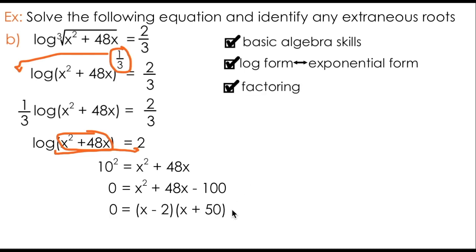Factoring this trinomial results in x minus 2 times x plus 50. By solving this quadratic equation, we see that x can equal 2 as well as x can equal negative 50. So we've managed to solve this logarithmic equation. We can check for extraneous roots by subbing both of our solutions into our original equation. Subbing in 2 results in 2 squared plus 48 times 2. That's a number I can definitely take the cubed root of, and I can definitely take the log of. So x equals 2 is a valid solution.